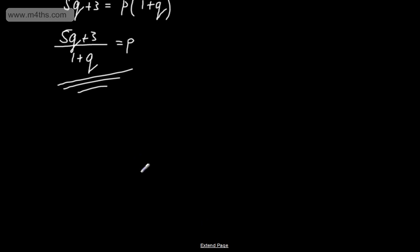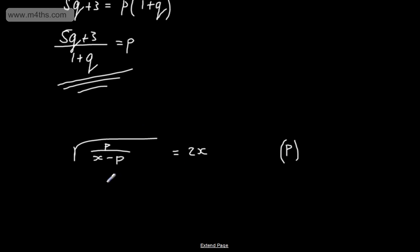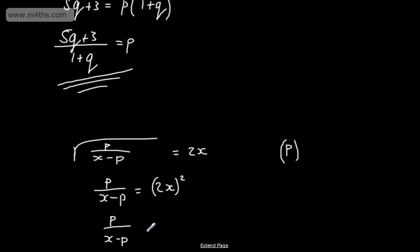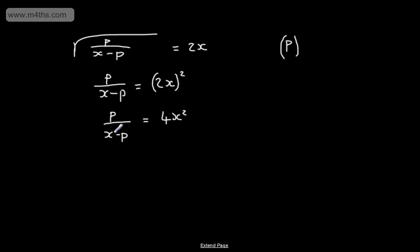Let's finish with one more example. We'll make p the subject. Let's say we've got √(p / (x - p)) = 2x. I'm going to square both sides. Squaring the square root of p over (x - p) just gives p / (x - p), and squaring 2x gives 4x². So p / (x - p) = 4x². We're trying to make p the subject, so I'm going to multiply both sides by (x - p), giving p = 4x²(x - p). We now need to expand the brackets, so p = 4x³ - 4px².